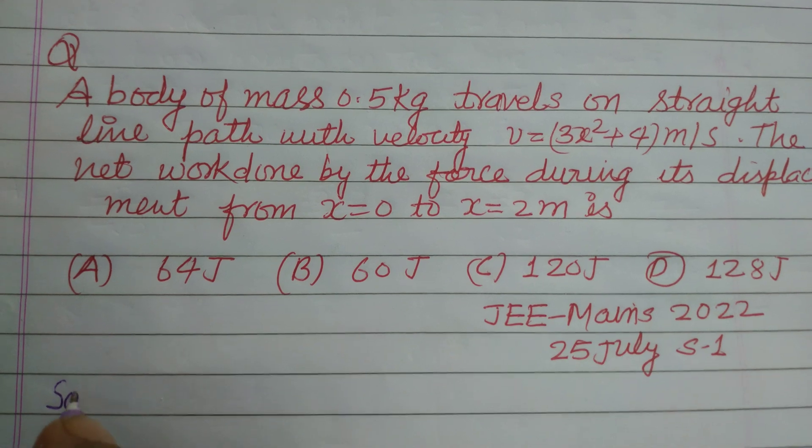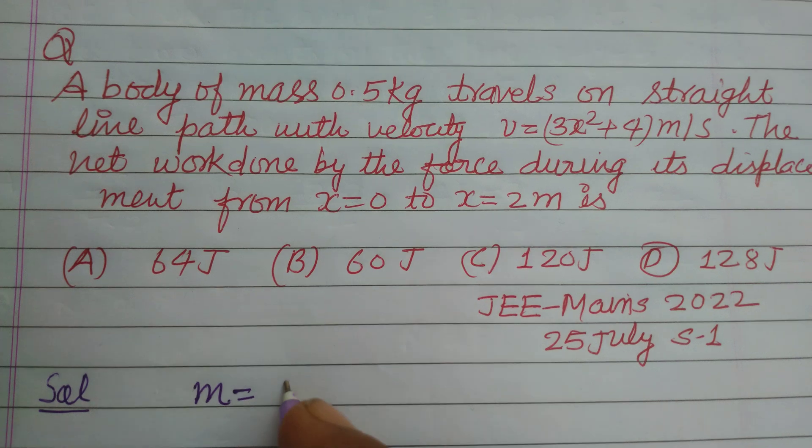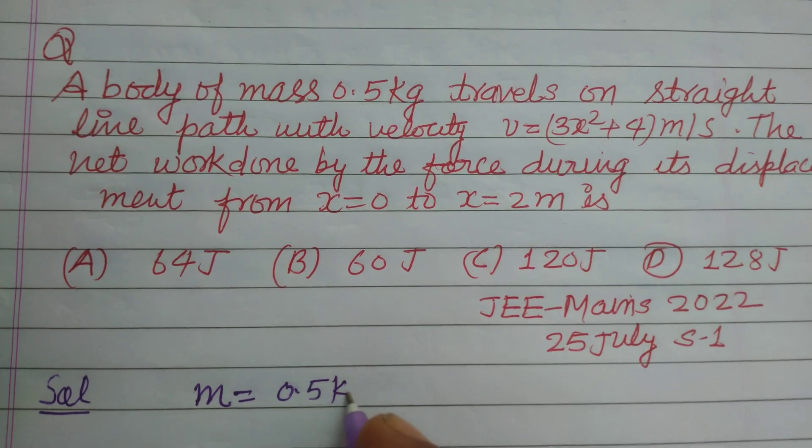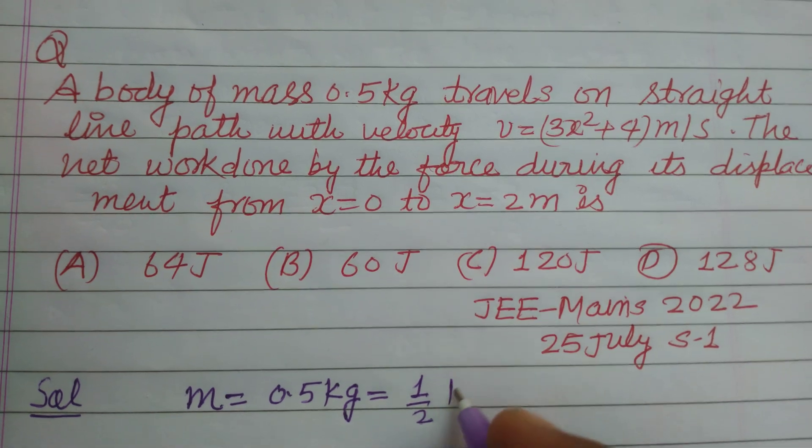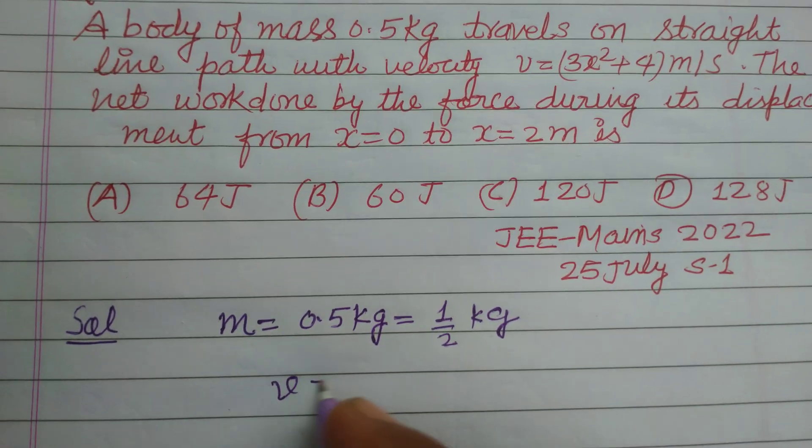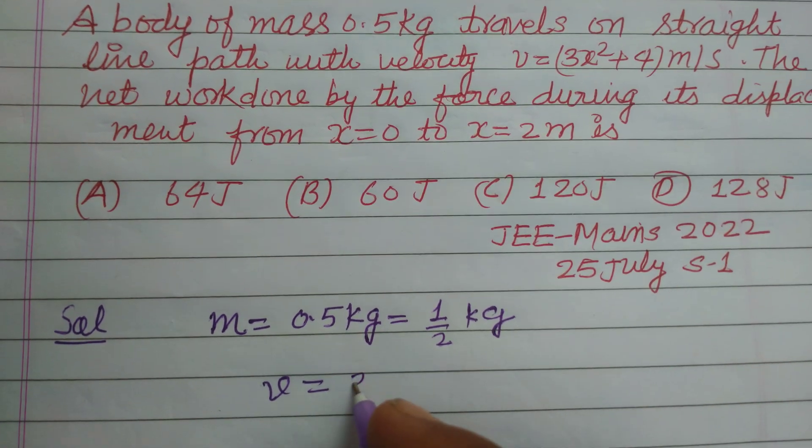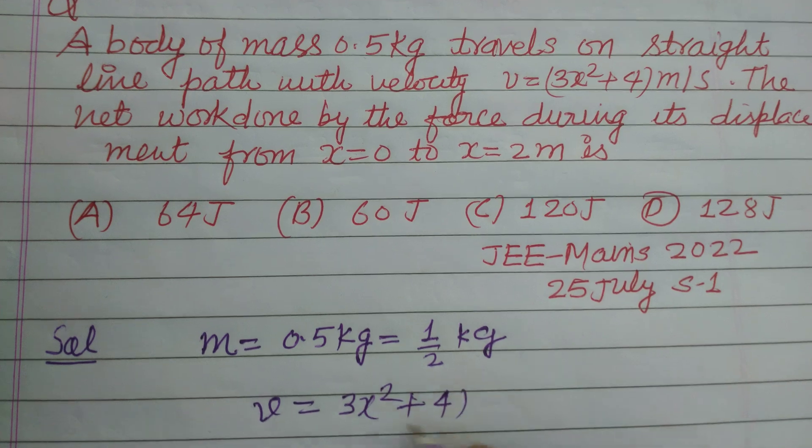So students, first we write the given data which is mass is given 0.5 kg which can be written as 1 by 2 kg. Here velocity is given v equal to 3x square plus 4 meters per second.